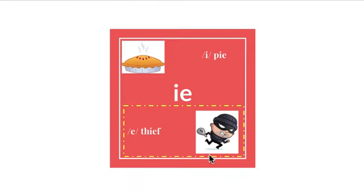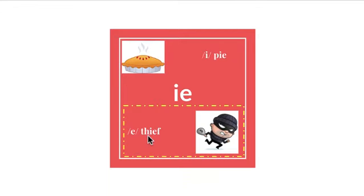Hello! Today we're going to continue to work on the IE vowel team. Remember, a vowel team is two vowel letters — I and E in this case — working together to represent one sound. IE can represent two different sounds: the long E like thief, or the long I like pi. It's more common for the IE sound to represent the long E sound like thief, which is why I have it boxed in here.